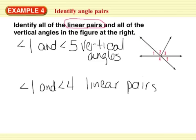Let's find another pair. Here I have a line, and 4 and 5 — their non-common sides form opposite rays. So angle 4 and angle 5 are a linear pair.